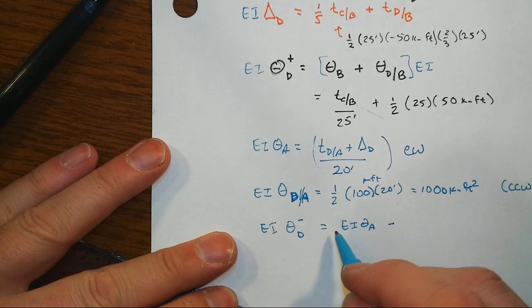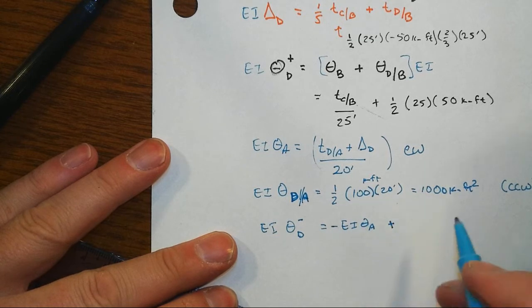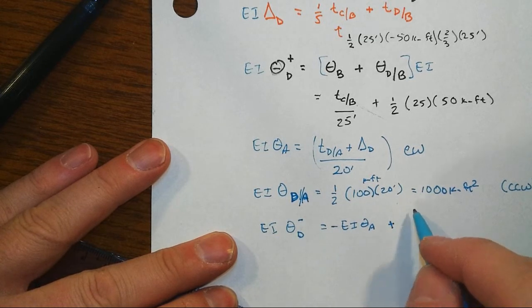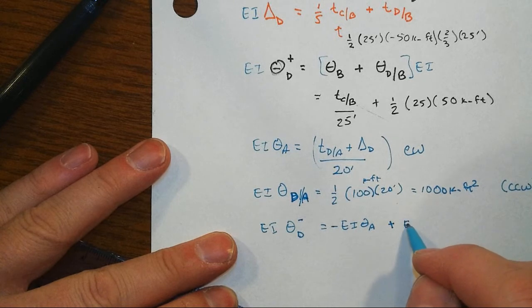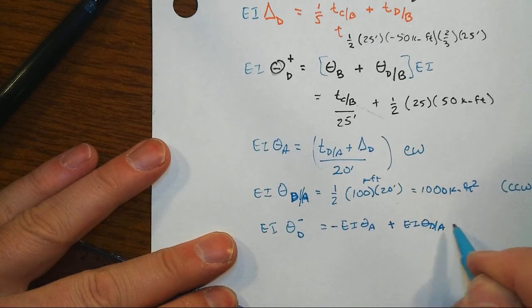And, you know, how do you want to do this? This is really a negative slope, so let's put it as a negative, and then we'll add in then EI theta D with respect to A. Put all the numbers in, but that's your strategy about how you're going to go about getting then these two rotations.